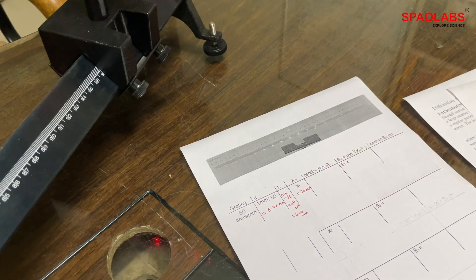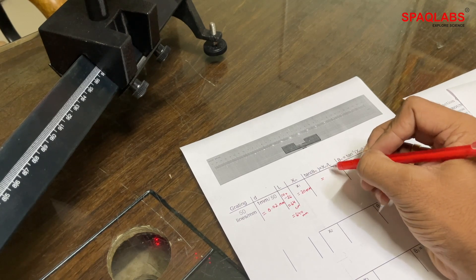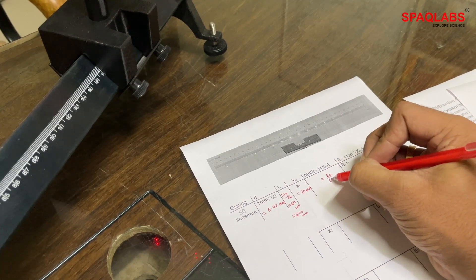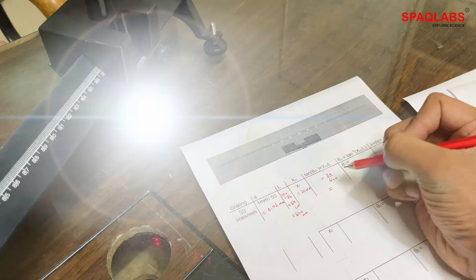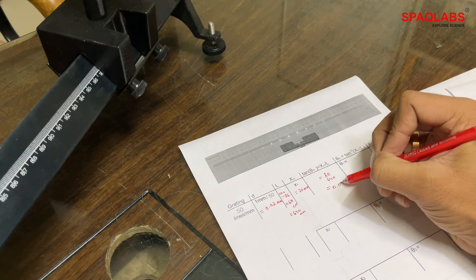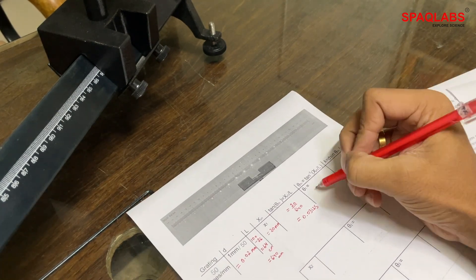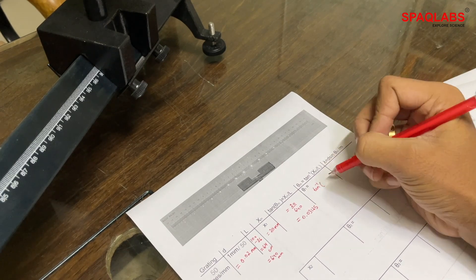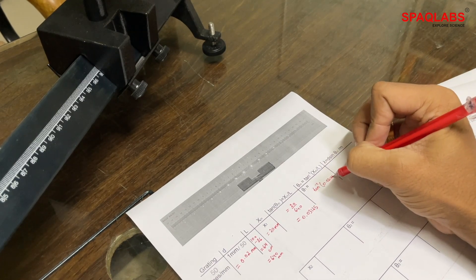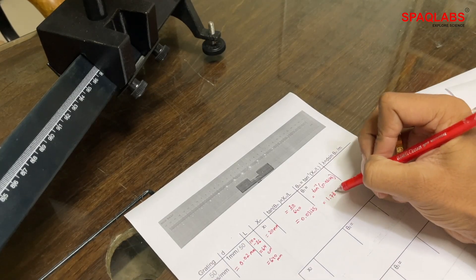Put these values in the observation table and calculate the wavelength. The value of theta is 1.789 degrees.